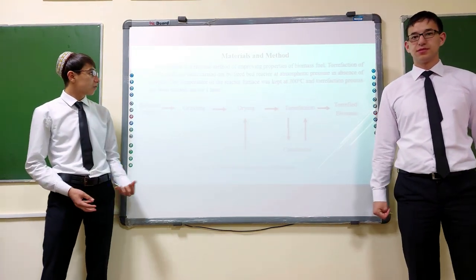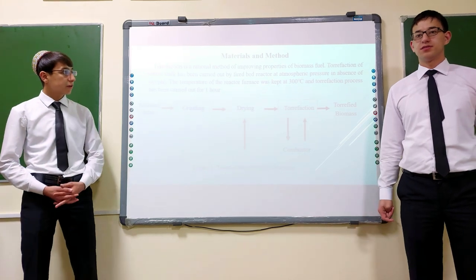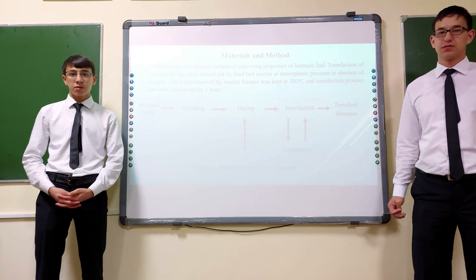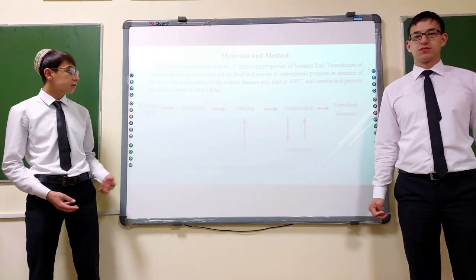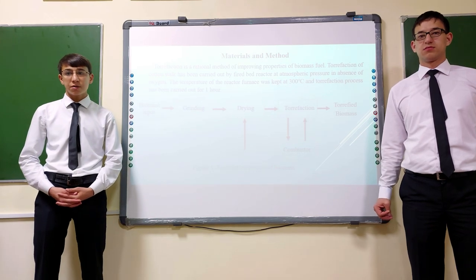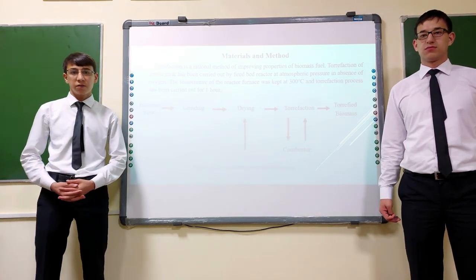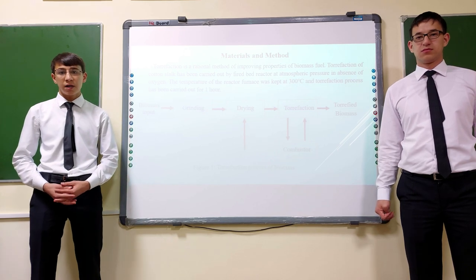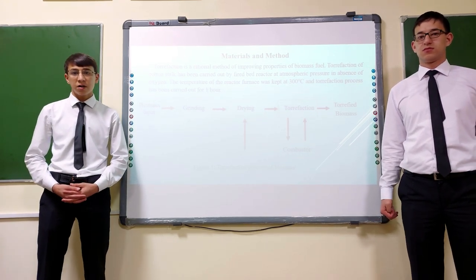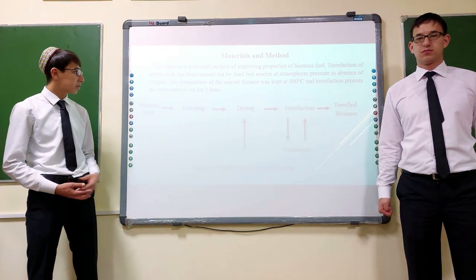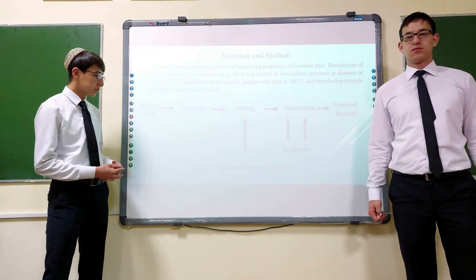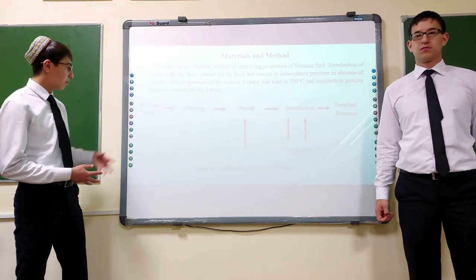Materials and methods. Torrefaction is a thermal method of improving biomass. Torrefaction of cotton stock has been carried out by fixed bed reactor at atmospheric pressure in absence of oxygen. The temperature of reactor furnace was kept at 300 degrees Celsius and torrefaction process has been carried out for one hour.